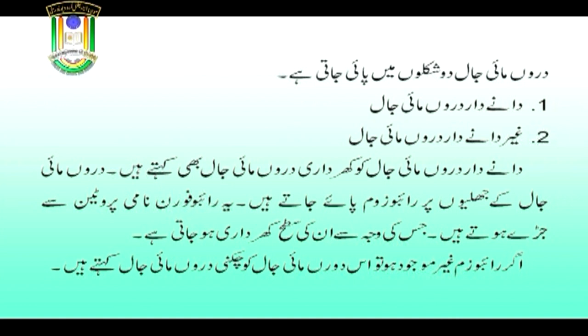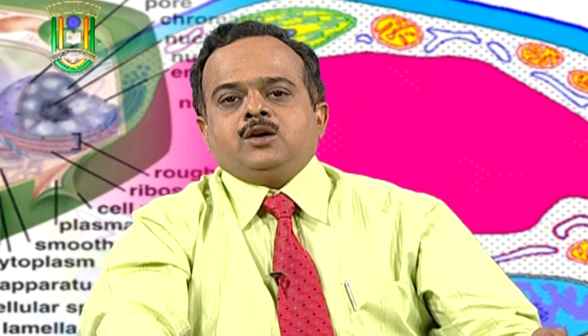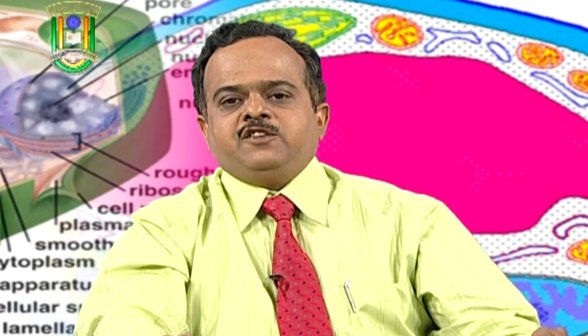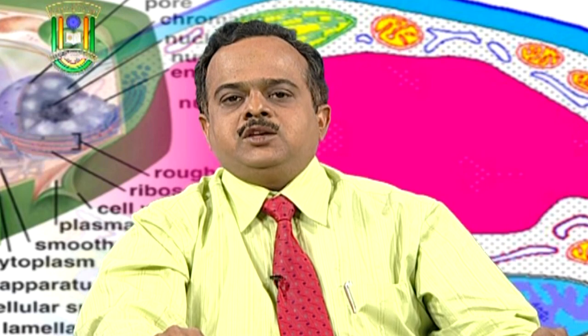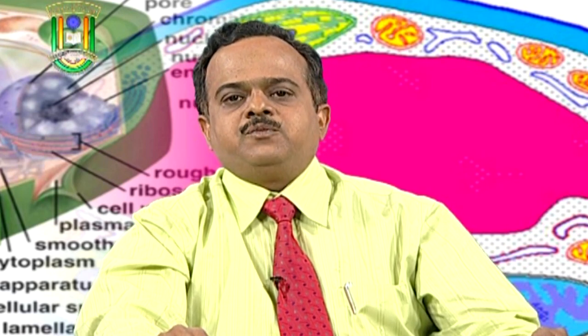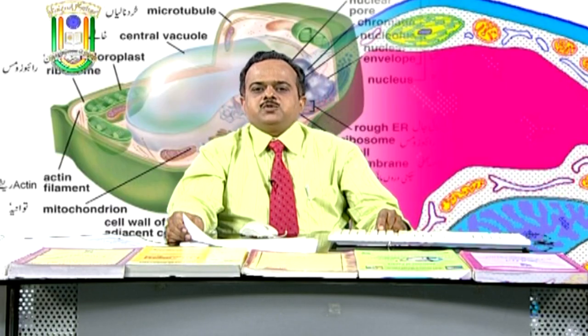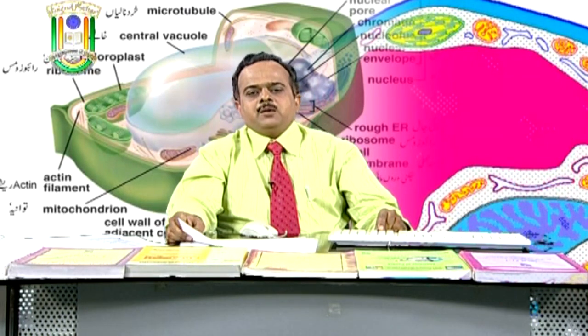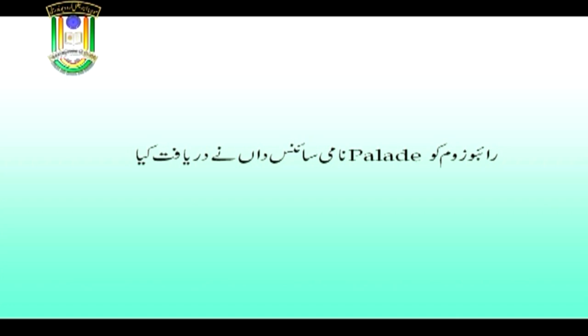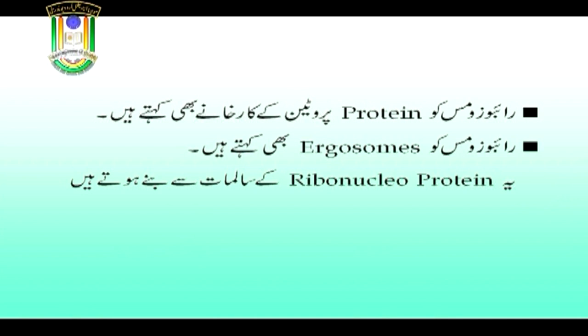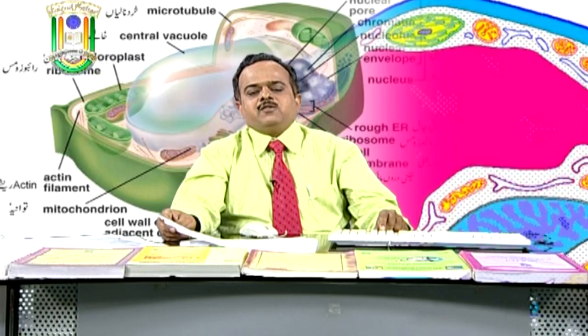دانے دار یعنی خردری درو مائی جال پروٹینز اور لپڈز کی تعلیف میں حصہ لیتی ہے، لیکن غیر دانے دار یعنی چکنی درو مائی جال صرف شحمیات یا لپڈز کی تعلیف میں مدد کرتی ہے۔ رائبوزومز خلوی مایہ میں پائے جانے والے چھوٹے خلوی عزویچے ہیں جن کو الیکٹران مائیکروسکوپ کی مدد سے دریافت کیا گیا۔ رائبوزومز کو پیلاڈے نامی سائنسدان نے دریافت کیا اور انہیں پروٹین کے کارخانے یعنی پروٹین فیکٹریز بھی کہتے ہیں۔ رائبوزوم کا دوسرا نام ارگوزوم ہے۔